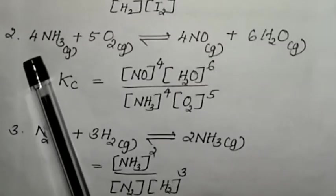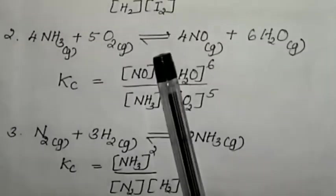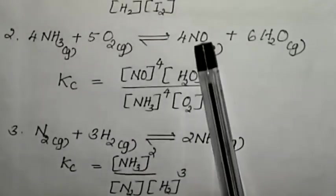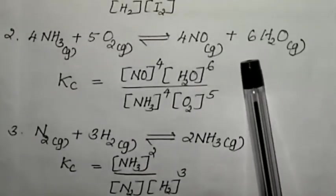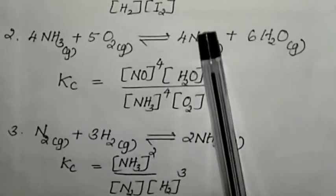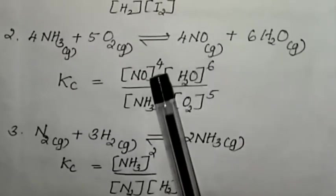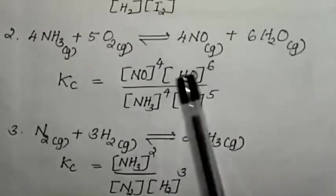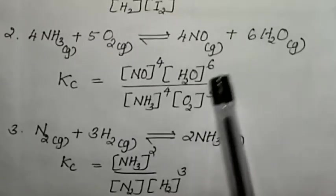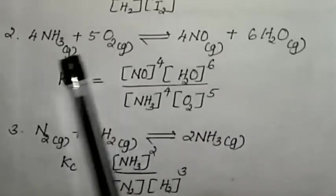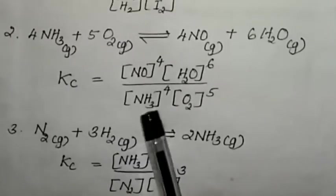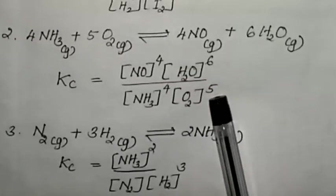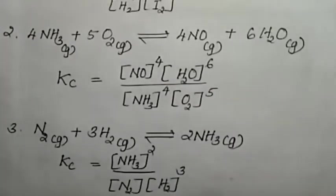Another example: 4NH₃ + 5O₂ reversibly gives 4NO + 6H₂O. Kc = [NO]⁴ × [H₂O]⁶ / [NH₃]⁴ × [O₂]⁵. The stoichiometric coefficients are written as the powers of each concentration term.